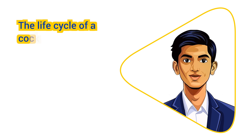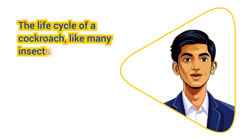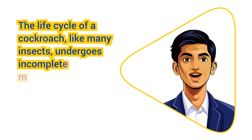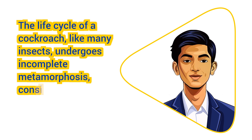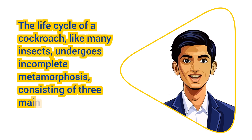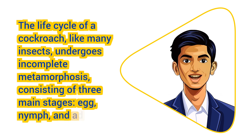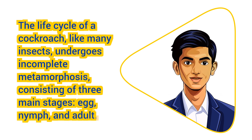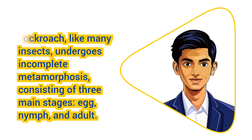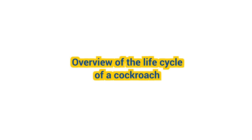The life cycle of a cockroach, like many insects, undergoes incomplete metamorphosis, consisting of three main stages: egg, nymph, and adult. Here's a detailed overview of the life cycle of a cockroach.